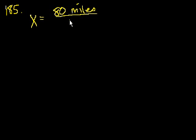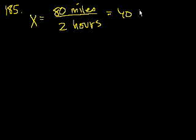We're on problem 185. Car X and car Y traveled the same 80 mile route. If car X took two hours, so X went 80 miles in two hours, that's 40 miles per hour.